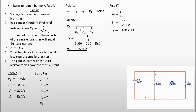And make sure we always carry our units. Amps is your current, ohms is resistance, and V is your voltage.